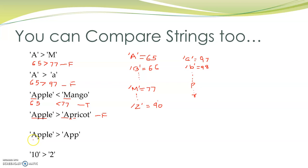When comparing Apple and app, A is same as A, P is same as P, and the third P is also same as P. Then there is nothing more to compare in app, but Apple still has more characters. In such a case, the string with greater length is considered to have the greater value, so Apple is greater than app. Therefore, this returns a value true.